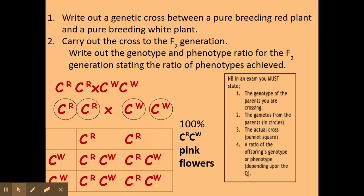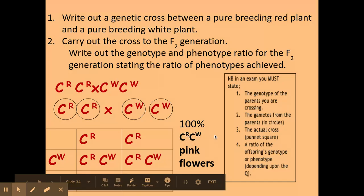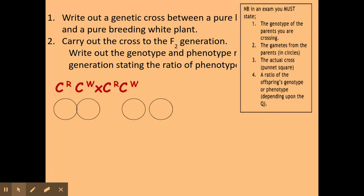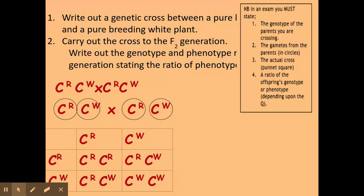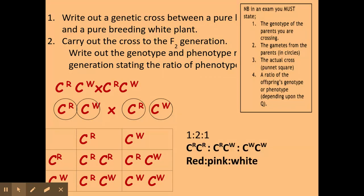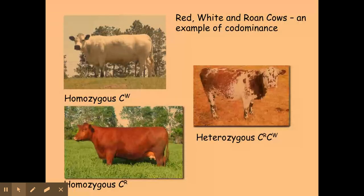The next example is crossing two F1 individuals to get the F2 generation. The genotypes of the parents are the products from the F1 generation. The possible gametes from these genotypes are placed into the cross, and the ratio I get is 1 red to 2 pink to 1 white — a 1:2:1 ratio.